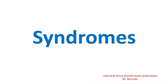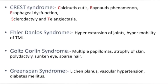So without wasting time, let's start. CREST syndrome: calcinosis cutis, Raynaud's phenomena, esophageal dysfunction, sclerodactyly, and telangiectasia — calcinosis cutis means deposition of calcium in the skin. Ehlers-Danlos syndrome: characterized by hyperextension of joints and hypermobility of the temporomandibular joint. Gorlin-Gallin syndrome: characterized by multiple papillomas, atrophy of skin, polydactyly, sunken eyes, and sparse hair.